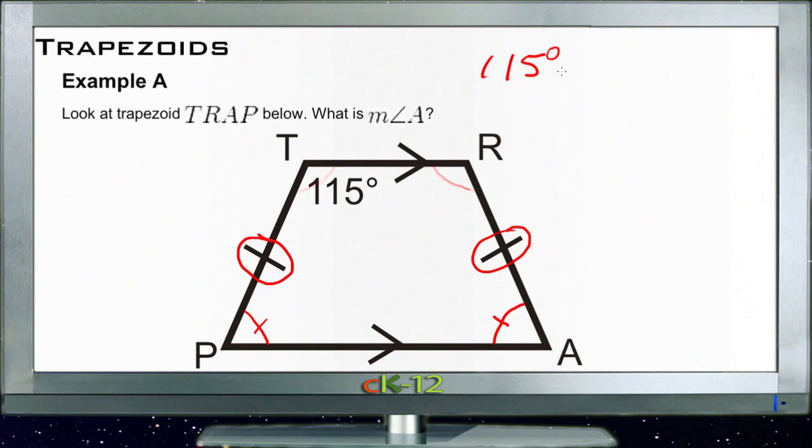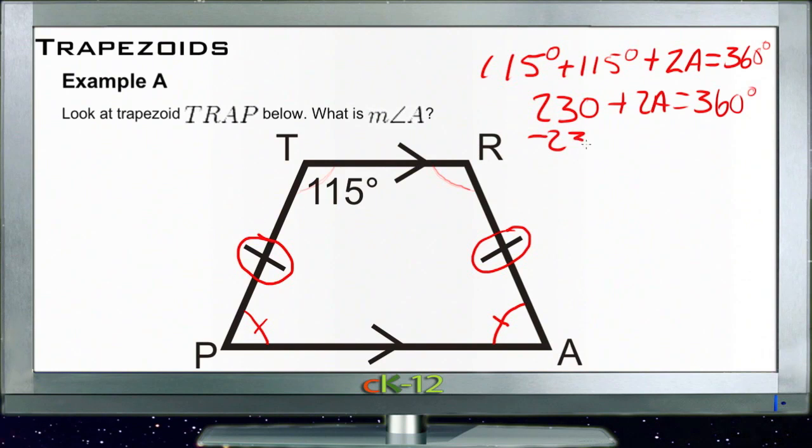Plus twice angle A is all equal to 360 degrees like any other quadrilateral. So now we have 115 twice, that's 230, plus twice angle A is 360. We subtract 230 from both sides, so right here we have twice angle A is equal to 130 degrees.